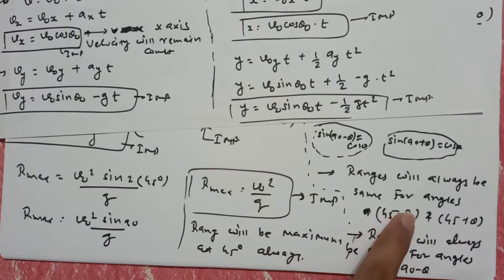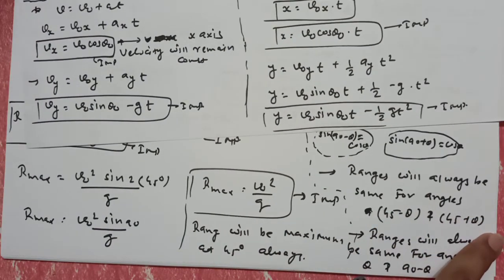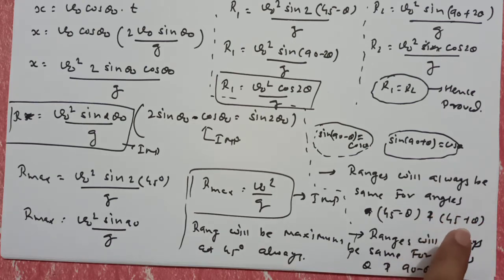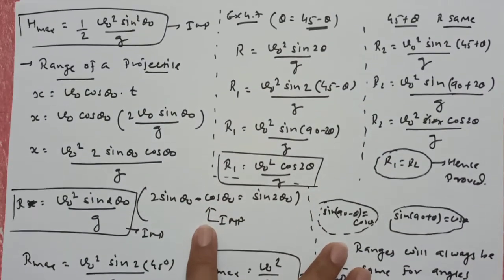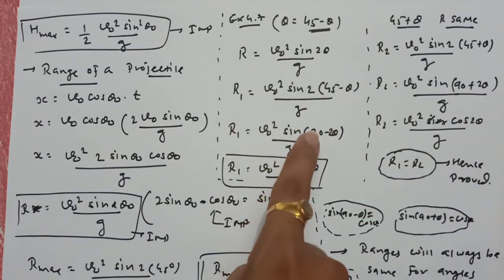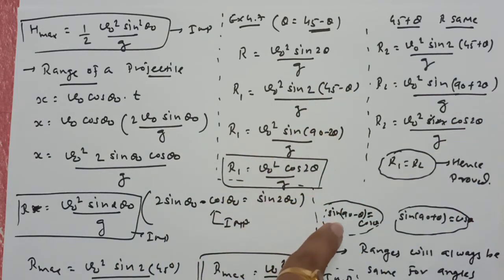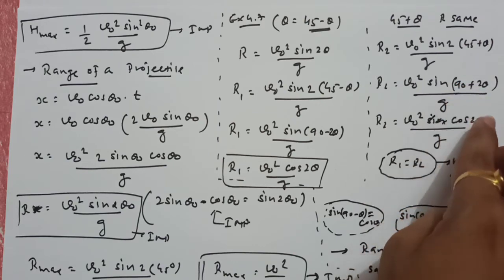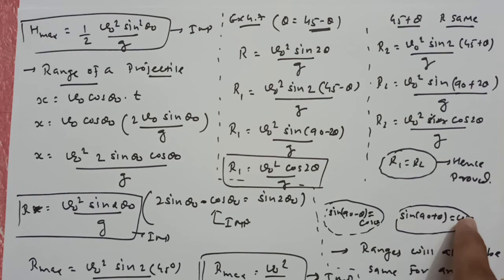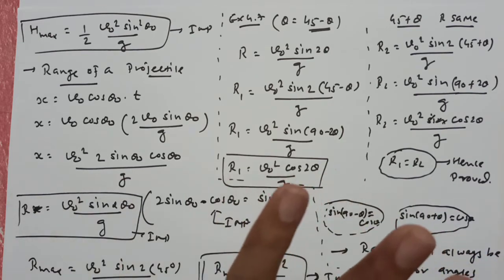Same होता है 45 minus theta and 45 plus theta. So this is very very important. Neat में इसको directly आप use कर सकते हो। Example 4.7, textbook में derive नहीं किया है, मैंने यह आपको with derivation solve करके दिया है। So इसको as it is ही लिखना। बस यह जो sin(90 minus 2 theta) लिखने का from formula — that we know sin(90 minus theta) is equal to cos theta. And यहाँ पे जब आप sin(90 plus theta) step लिखते हो, तो वहाँ पे भी लिखना: as we know sin(90 plus theta) is equal to cos theta. Hence your numerical is perfect.